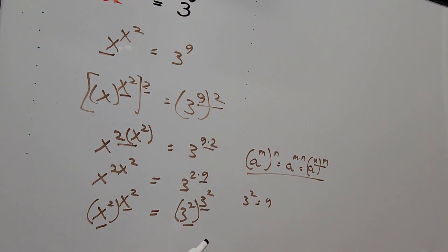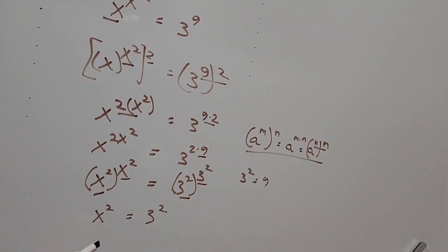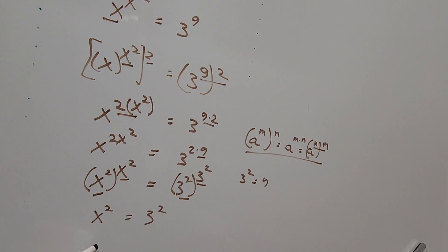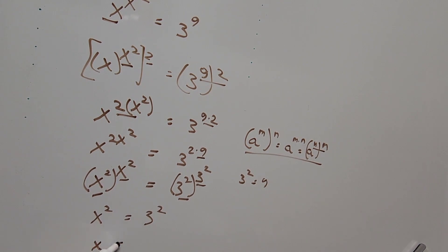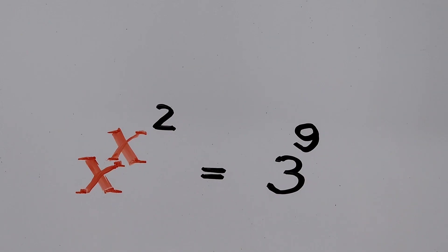By correspondence between the left and right hand sides, we can clearly conclude that x squared equals 3 squared, and therefore x is equal to 3. That is our final answer for the first method.